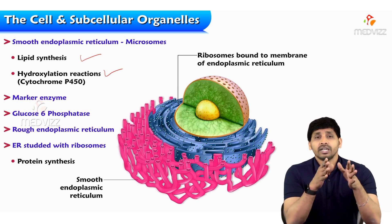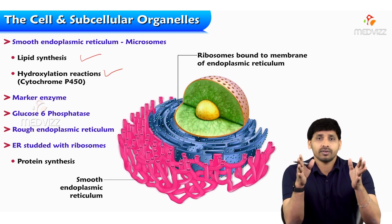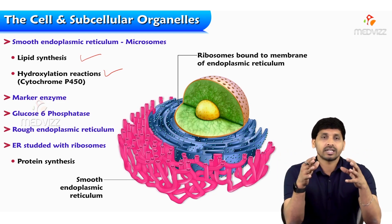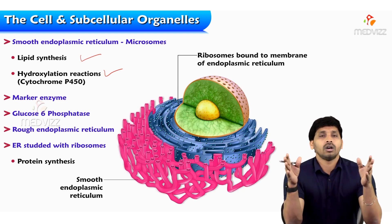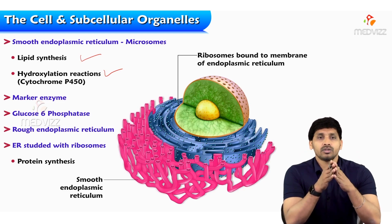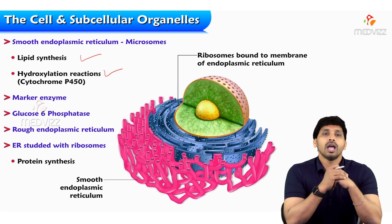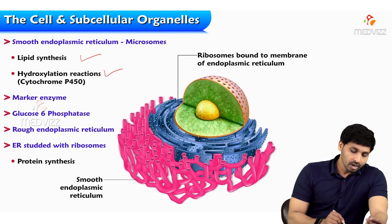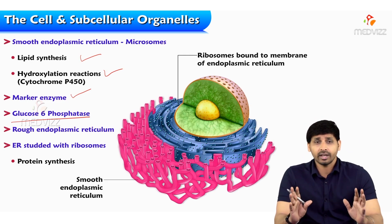Hydroxylation reactions in the ER are very important. Once a protein is synthesized, it is like a movie shot over four to five hours — editing is done to remove unnecessary scenes and produce a tight two-hour film. Similarly, any protein synthesized in the body has useful and non-useful parts; the non-useful parts are removed, and additives like hydroxyl groups or phosphate groups are added. These reactions are aided by the endoplasmic reticulum.